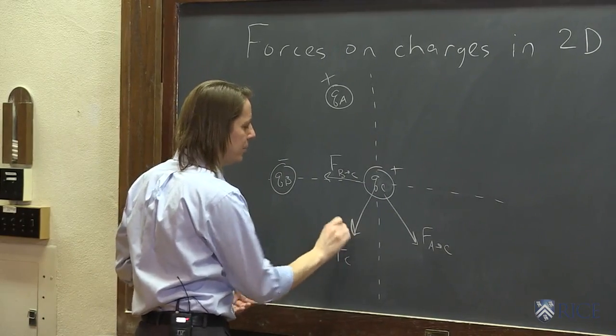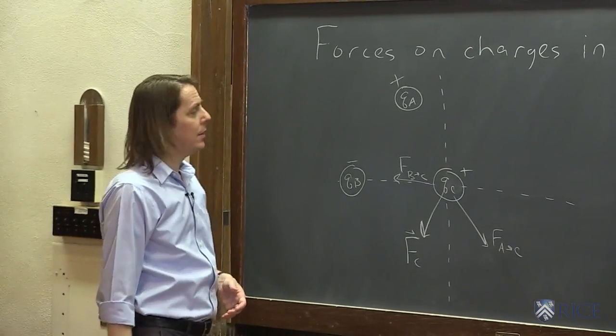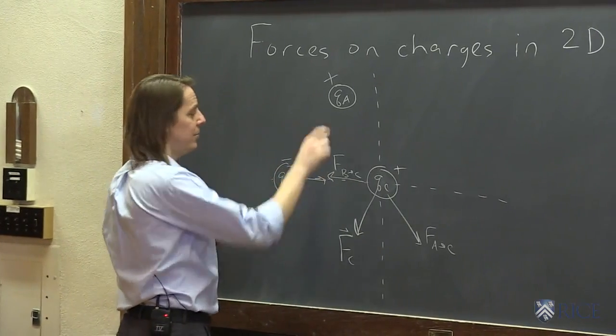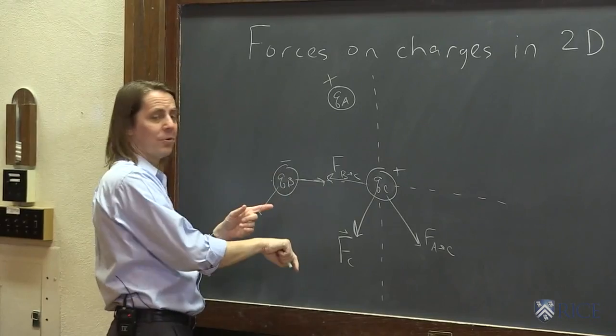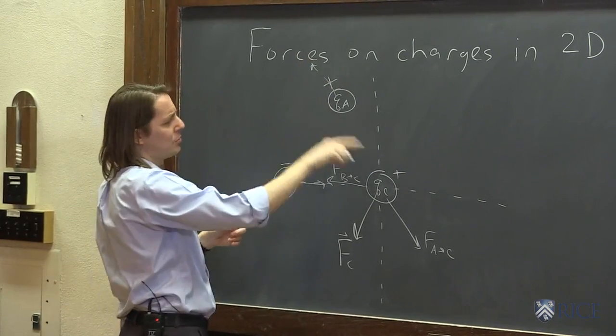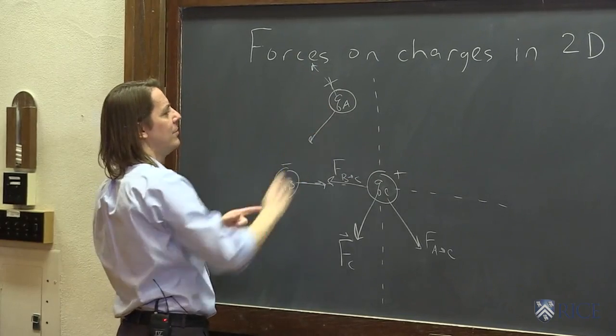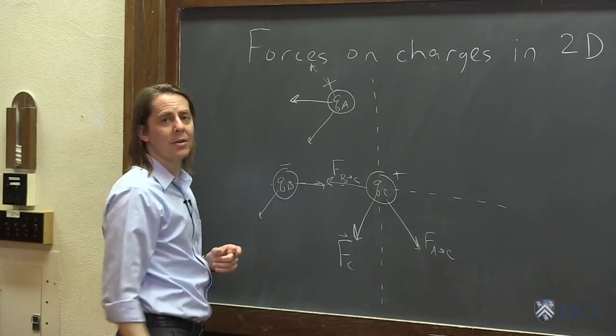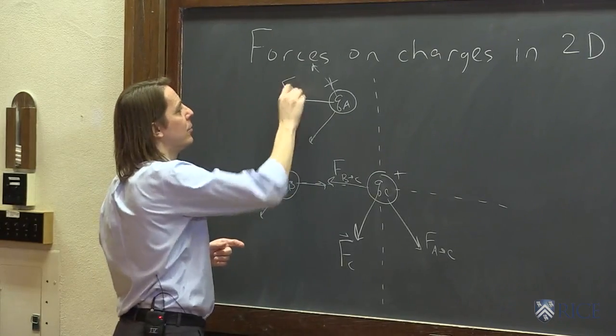That's the total force on c. You could actually do it for all three, right? So here this force is also attractive and this one would be repulsive, so it would feel a force kind of down. And this one would have a force going up this way - it's repulsive by that one and it'd be attractive like this one. And this one would have a net force kind of that way, right? F on a, force on a.